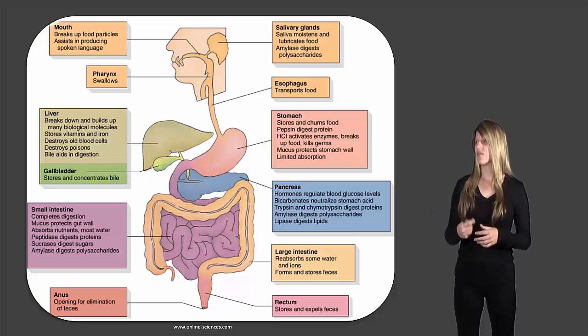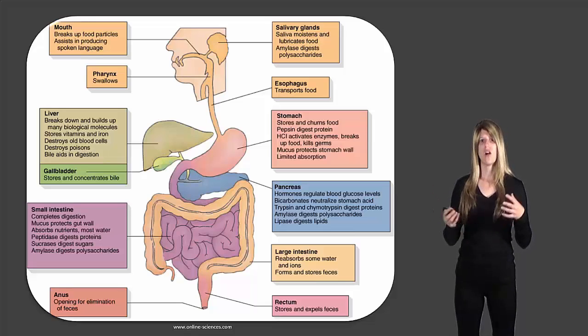Now right next to the liver is the gallbladder, and the gallbladder stores all of that bile before it gets put into the stomach for digestion to occur. Or stomach and sort of the beginning of the small intestine. So this is where the bile is stored in the gallbladder.